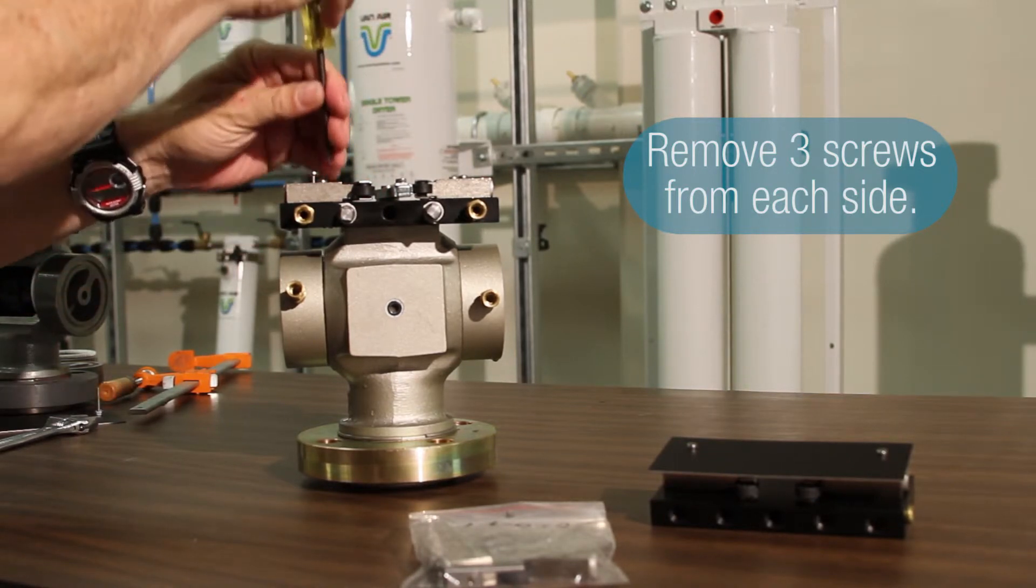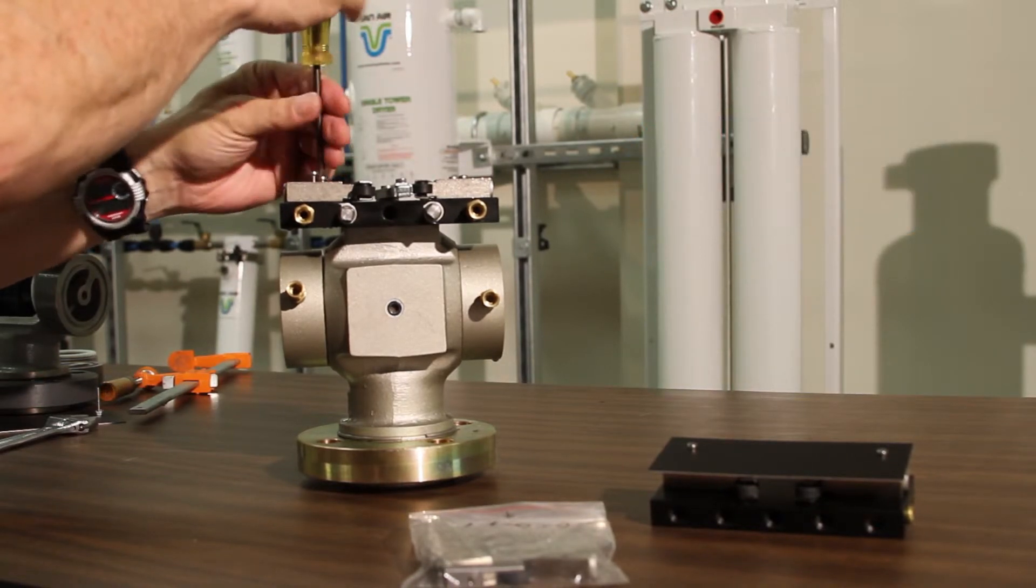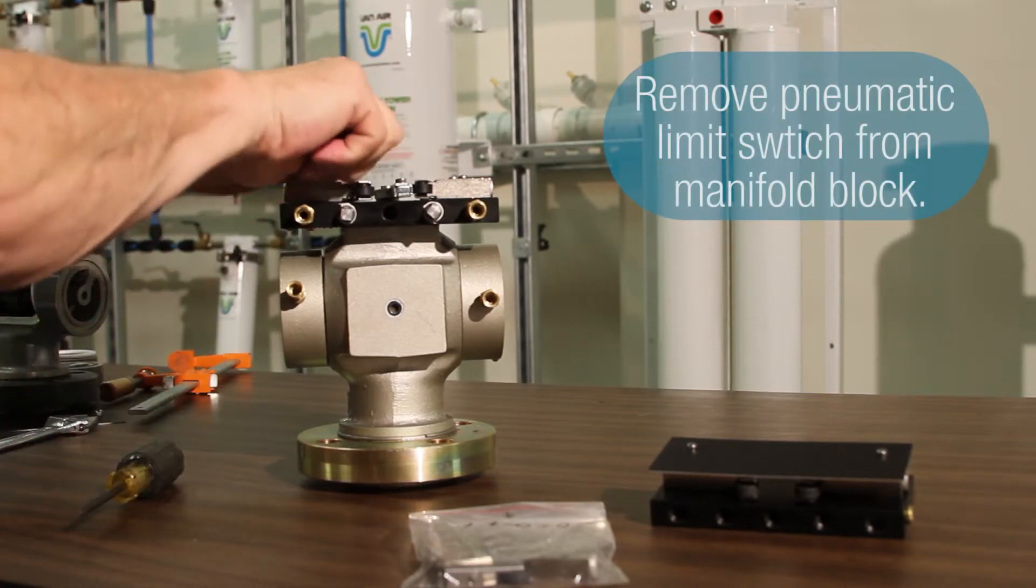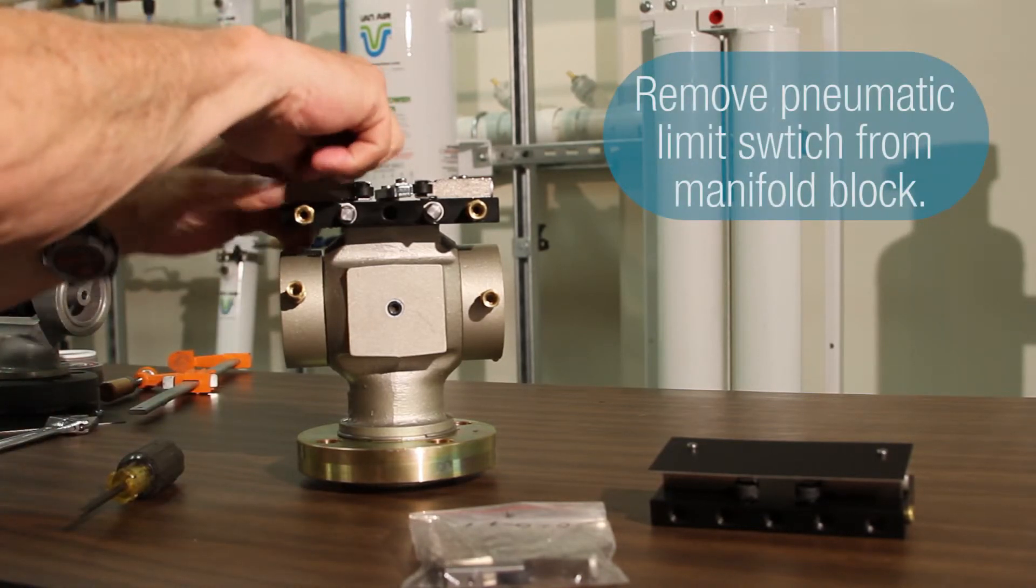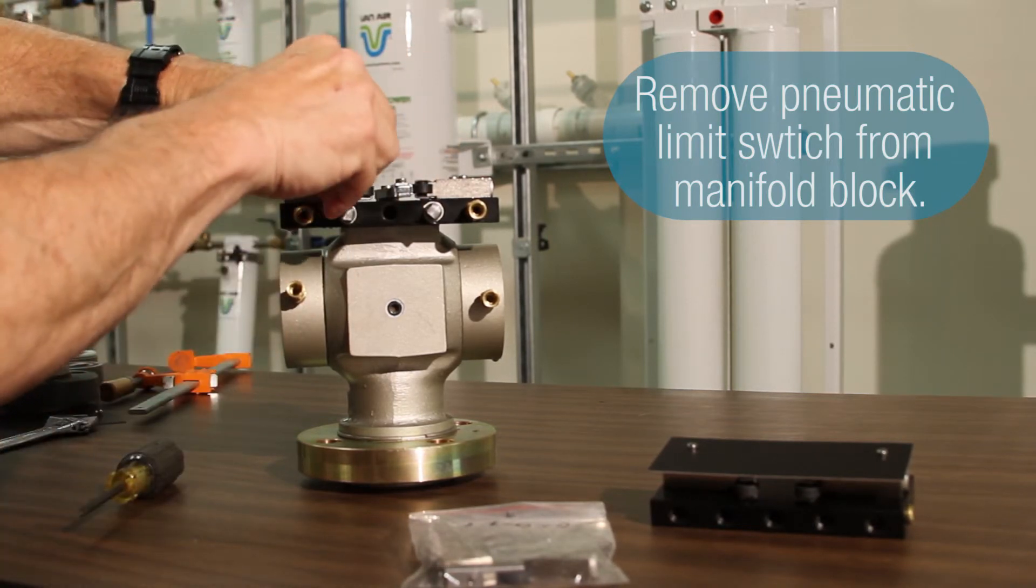Now, the other thing is to take the valve apart to pull the shuttle out of the valve. You actually literally have to take one of the pneumatic limit switches off the manifold block to allow the position indicator arm to move far enough to allow the shuttle to come out of the valve body.